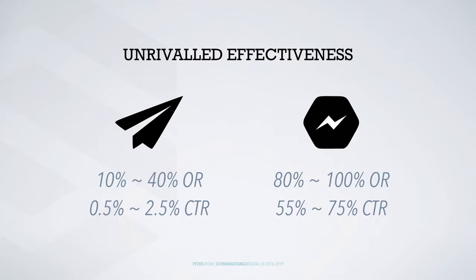Let's take a look at the numbers. Email has an average of about 10 to 40% open rate in general. Messenger has 80 to 100% open rate. Email has 0.5 to 2.5% click-through rate — that means when they get an email with a link, they actually click it to go wherever the email directs them. Messenger has a 55 to 75% click-through rate.